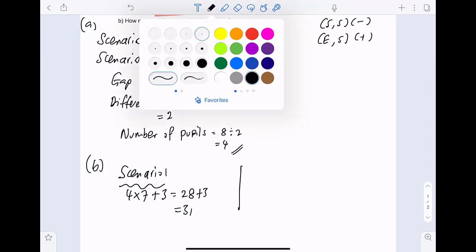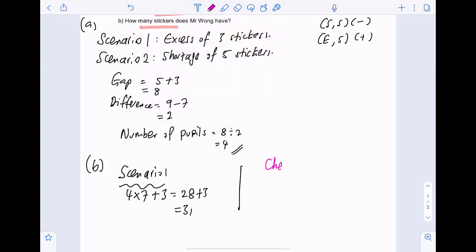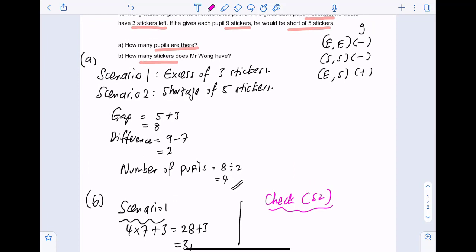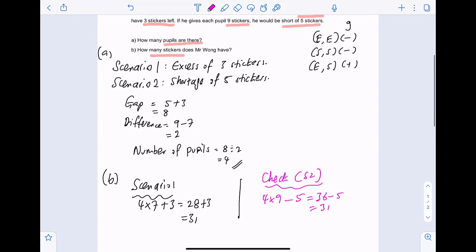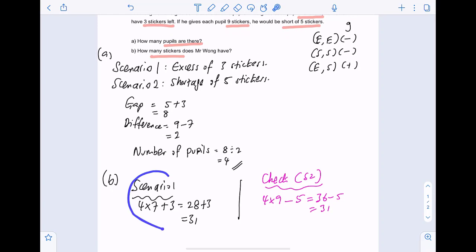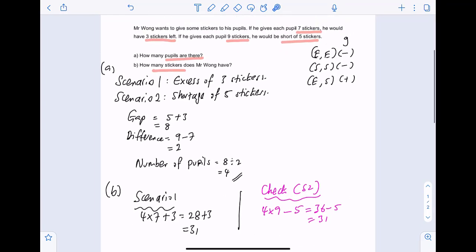You can also do a very quick check. We can check with scenario number two. So, scenario number two is a shortage of five stickers. So, what we do is four times nine, four pupils times nine stickers each. There will be a shortage. So, it's not really enough. So, you need to take away five because you don't have that five stickers. You're short of that five stickers. So, thirty-six minus five, the answer will still be thirty-one stickers. So, in the exams, you don't have to show both. If you have the time, do the check and use only one of the scenarios.